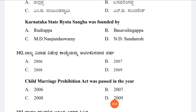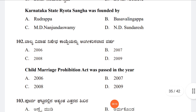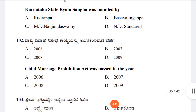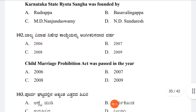Question 102: The Child Marriage Prohibition Act was passed in which year? Option A: 2006, Option B: 2007, Option C: 2008, Option D: 2009. The answer is Option A, 2006.